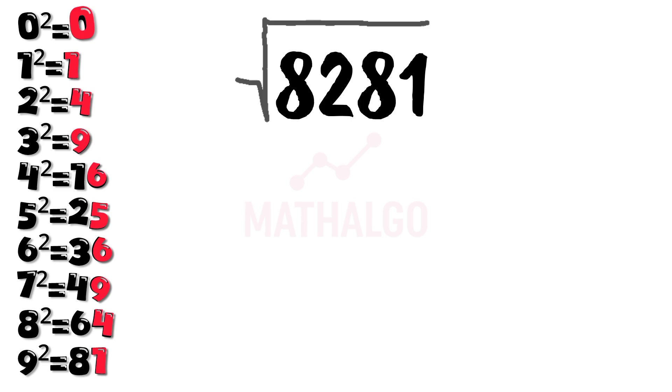What about this one? 8281. Here's how to do it. Which squares end in 1? 1 squared equals 1, and 9 squared equals 81. So write down both.